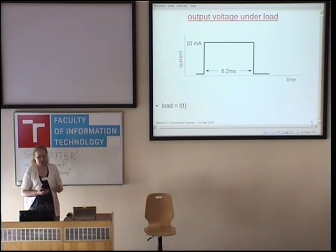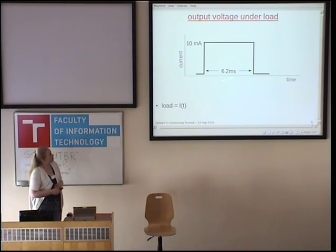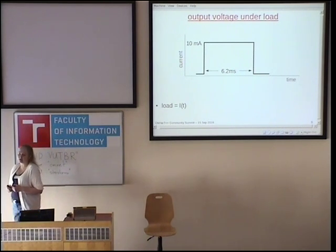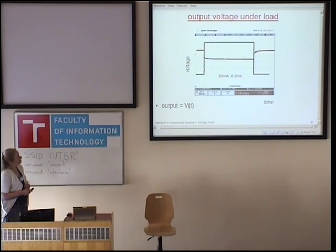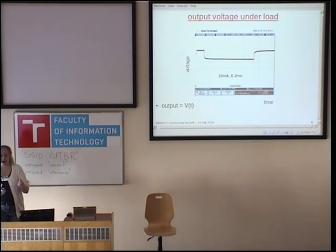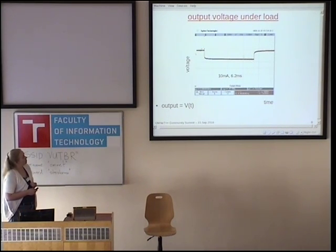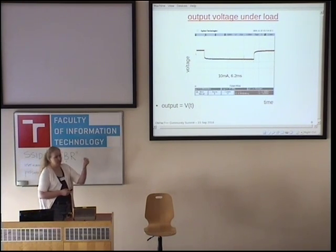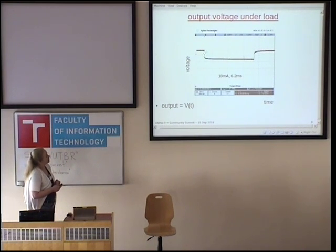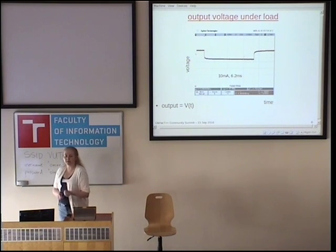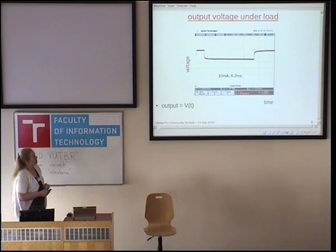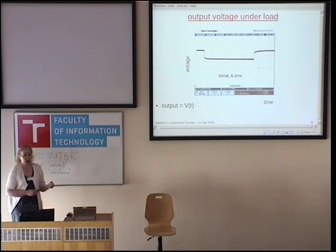We usually describe the load on a battery in terms of the current as a function of time. We can think about a load current versus time where we draw 10 milliamps for 6.2 milliseconds — that would be the sort of load you would see with a Zigbee transmitter. We can superimpose that load over an oscilloscope trace of the battery output voltage. We start with some initial voltage, then we see a very rapid drop — that's the internal resistance of the battery. Since we're drawing a current through the battery, that resistance causes a voltage drop. Then the voltage continues to drop, reflecting the ability of the electrochemical reactions inside the battery to keep up with the demand. Here it can't quite keep up, so the voltage is beginning to drop while we're drawing this current.